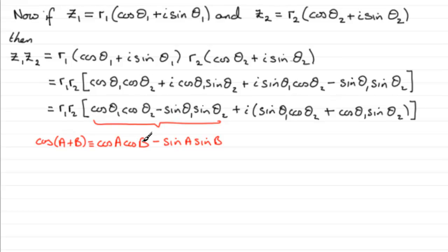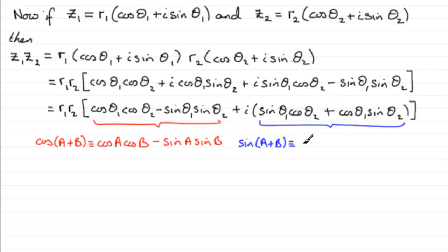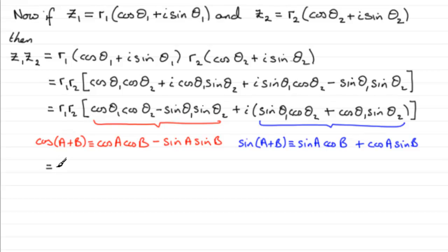With A as theta 1 and B as theta 2, you can see it matches up — this is exactly the same as cosine of (theta 1 + theta 2). And for the imaginary part, do you recognize this pattern? This is the sine addition identity: sin(A + B) equals sine A cos B plus cos A sine B. Again, A matches theta 1 and B matches theta 2.